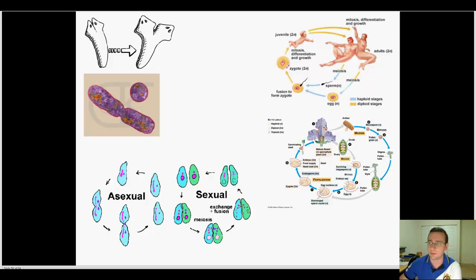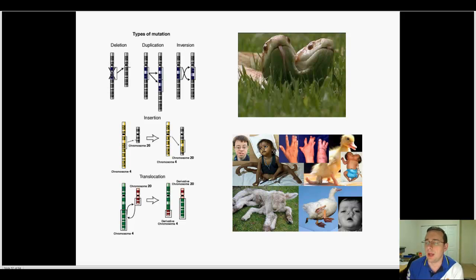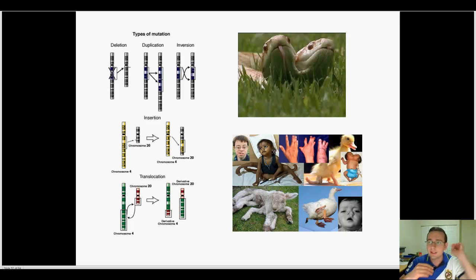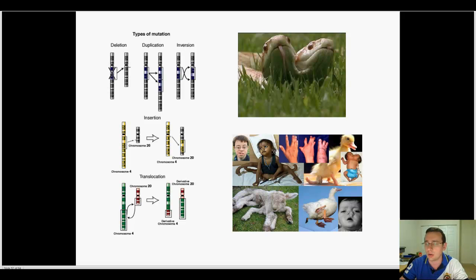Before we do that, I want to do a quick review: it is possible to create variation without sexual reproduction. The most obvious way is through mutations, which are basically changes in the DNA sequence causing changes in chromosomal or genetic structure, leading to birth defects or alterations that might become adaptations. Mutations are the reason there are so many different kinds of life in the world.